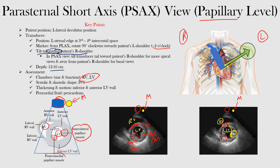We can also visualize the different portions of the left ventricular wall. In this case, we can see the inferior and the anterior wall. So let's orient ourselves here. We have the left ventricle, which is this here. Then we can see the anterior wall, which would be this portion. And we can also see the inferior wall, which would be here.